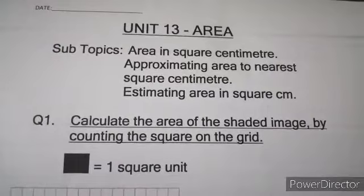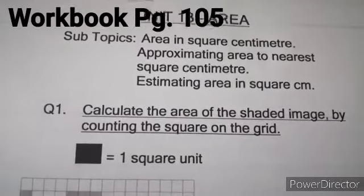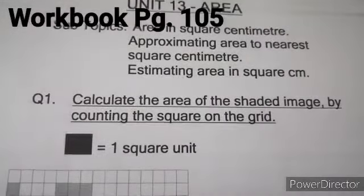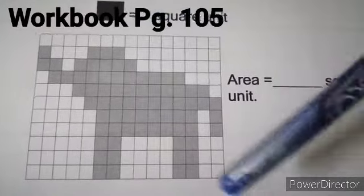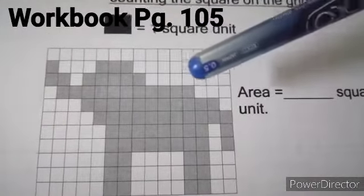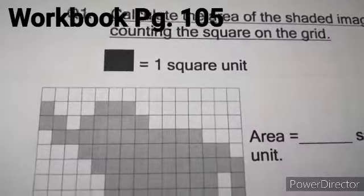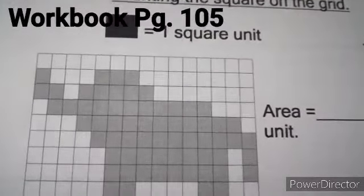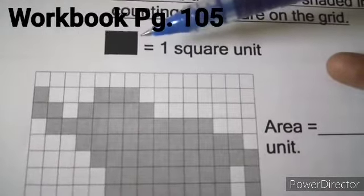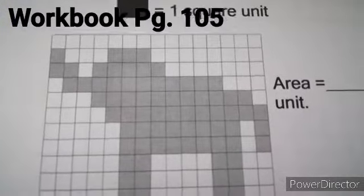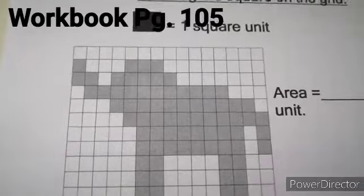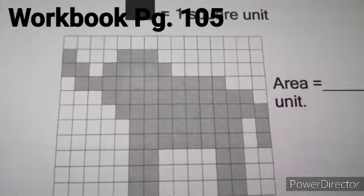Dear students, now take your workbook, unit 13 area, and let's do the problems. The first question says: calculate the area of the shaded image by counting the squares on the grid. Each box is equal to one square unit. Area can also be written as square centimeters if each side of the box is one centimeter. Here, they have given it as one square unit, so always write area in square units — just as we write length in centimeters, meters, or kilometers.